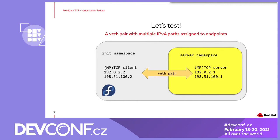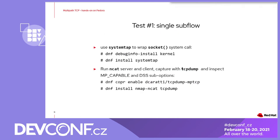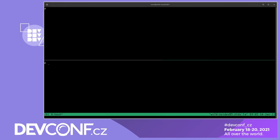Now we have the topology ready and it's time to run the first test — the most basic one — where all MPTCP traffic goes through a single TCP subflow. We are going to use NCAT both as server and client, and use SystemTap to install a kprobe that remaps the TCP protocol number into MPTCP. Finally, we install TCP dump to capture and dissect the traffic. Let's now see how it goes. Let's see the basic topology in action, first using TCP. Here we have the server namespace with IP addresses assigned like in the diagram.